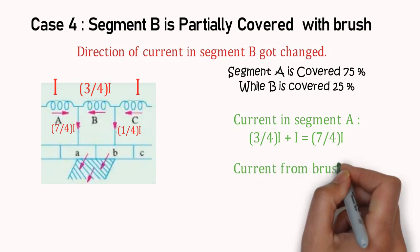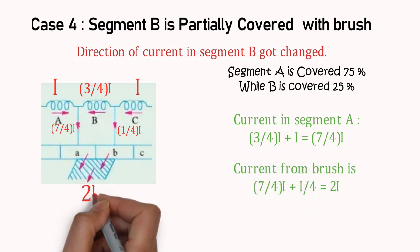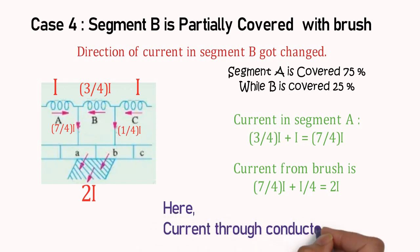Total 2I current is passing through brush, and 3/4th of I is passing through coil B. For easy calculation, negative sign is written.